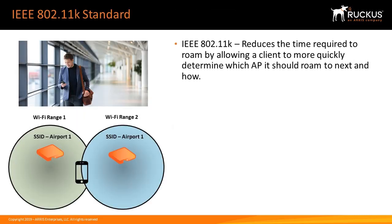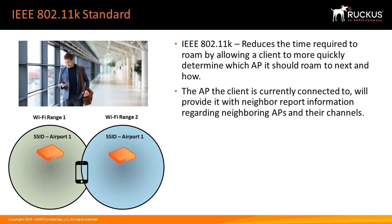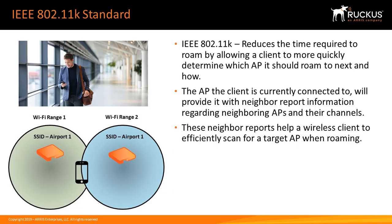The IEEE 802.11k standard reduces the time required to roam by allowing a client to more quickly determine which AP it should roam to next and how. The AP the client is currently connected to will provide it with neighbor report information regarding neighboring APs and their channels. These neighbor reports help a wireless client to efficiently scan for a target AP when roaming.